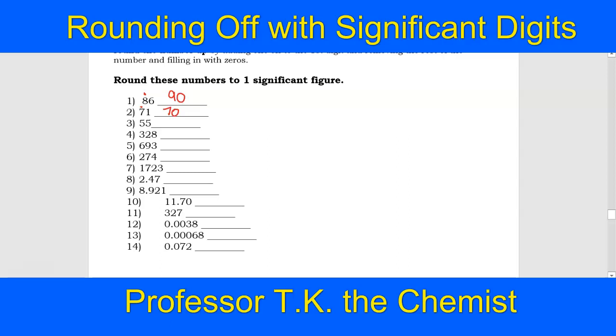For 55, put a dot above the first five. Look to the right of that. That five tells that first five to go up to a six. So I'm going to fill in the next digit with a zero.